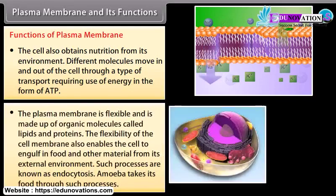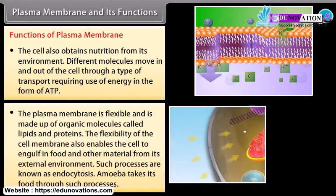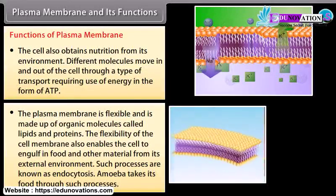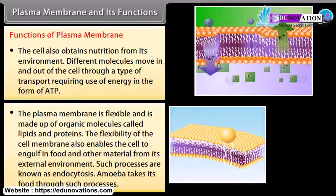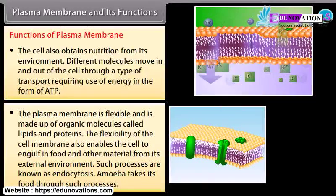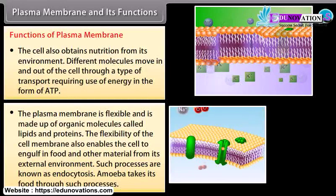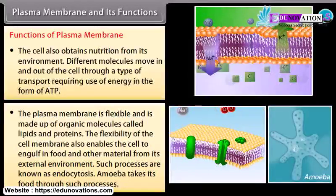The plasma membrane is flexible and is made up of organic molecules called lipids and proteins. The flexibility of the cell membrane also enables the cell to engulf food and other materials from its external environment. Such processes are known as endocytosis. Amoeba takes its food through such processes.